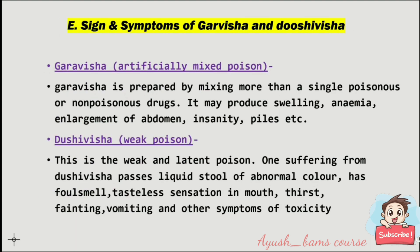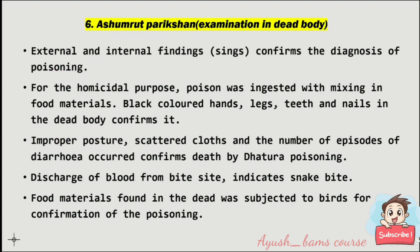Signs and symptoms of garivisha and dushivisha: garivisha means artificially mixed poison, prepared by mixing more than a single poison or non-poisonous drugs. It may produce anemia, enlargement of abdomen, etc. Dushivisha means weak or latent poison. One suffering from dushivisha passes liquid stool of abnormal color with foul smell, has tasteless sensation in the mouth, vomiting, and other symptoms of toxicity.